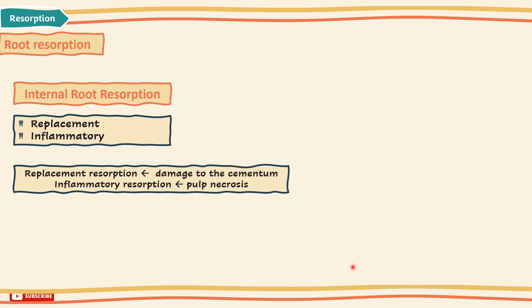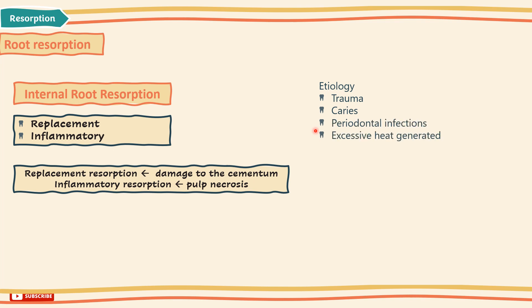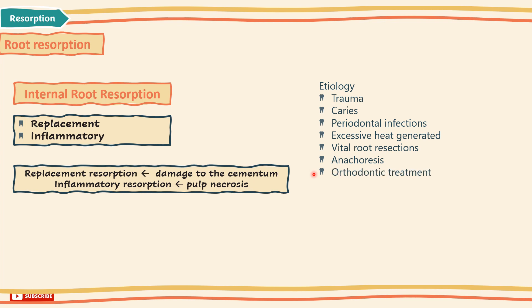Etiological factors of internal root resorption may include trauma, caries, periapical infections, excessive heat generated during restorative procedures on vital teeth, vital root resection, anachoresis — meaning bacteria present in blood or lymph attracted to the dental pulp following trauma or an operative procedure that produced inflammation without causing pulp exposure — orthodontic treatment with uncontrolled forces, cracked teeth, or idiopathic dystrophic changes to the normal pulp.